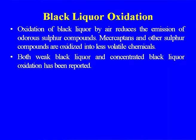Oxidation of the black liquor by air reduces the emission of odorous sulphur compounds, because before that it is converted to sodium sulphide and sodium thiosulphate. Mercaptans and other sulphur compounds are oxidized into less volatile chemicals. There are two types of black liquor oxidation systems: weak black liquor oxidation — before going to the evaporator — and concentrated black liquor oxidation. In both cases both processes are used, but weak black liquor oxidation was earlier very common.